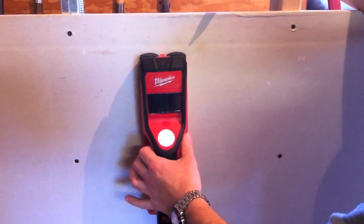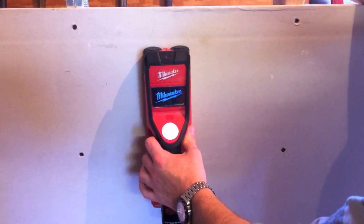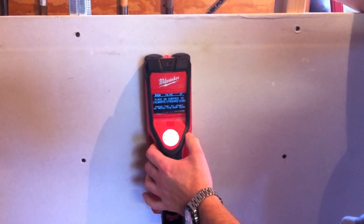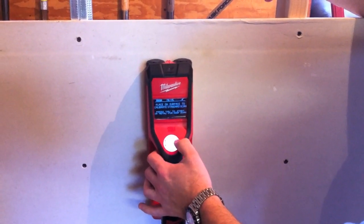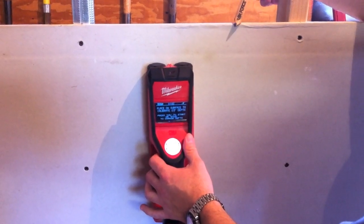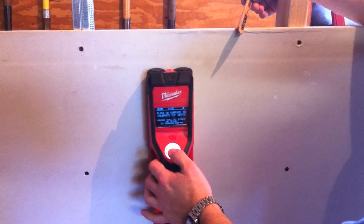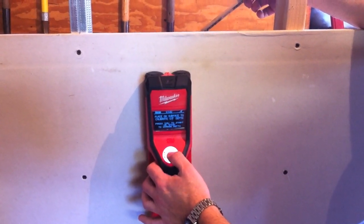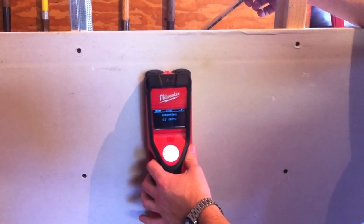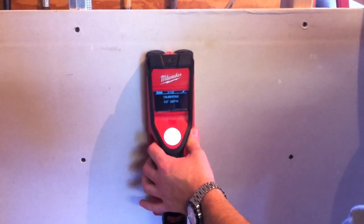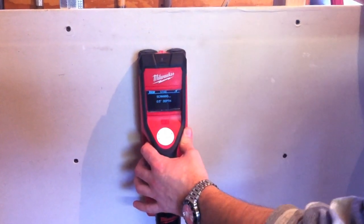So we're going to hit the power button right there. Unit's going to power up, and we're looking for studs, so we're going to hit stud. We're about a half inch deep right now. We can keep it on that setting because that's how deep drywall is. So we're going to hit calibrate, and the unit's calibrating, and now we're in scanning mode.